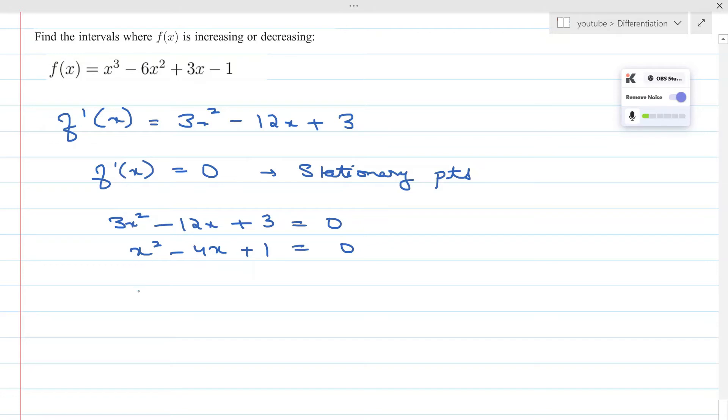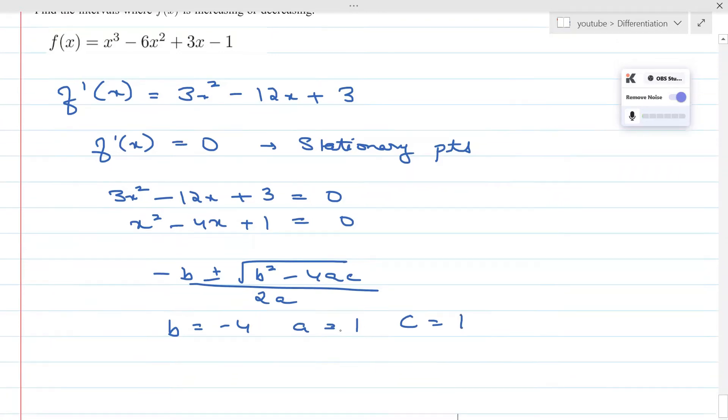Now the roots of this equation would be [-b ± √(b² - 4ac)] / 2a. The b value here is -4, a value is 1, and c value is 1 from our quadratic equation.